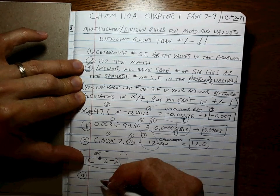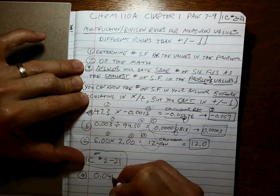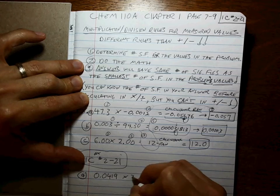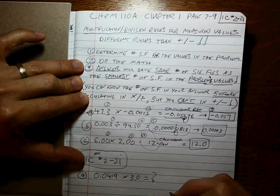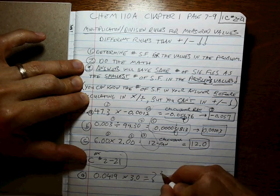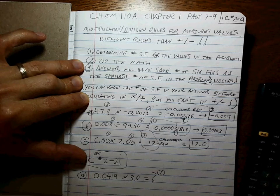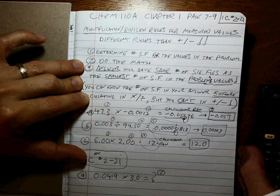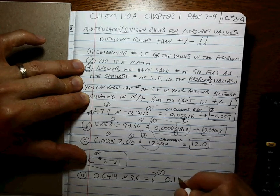How many, let's say, 0.0419 times 3.0 equals what? It shouldn't take you very long to know that that number has 2 sig figs. That the final answer should be 0.13.